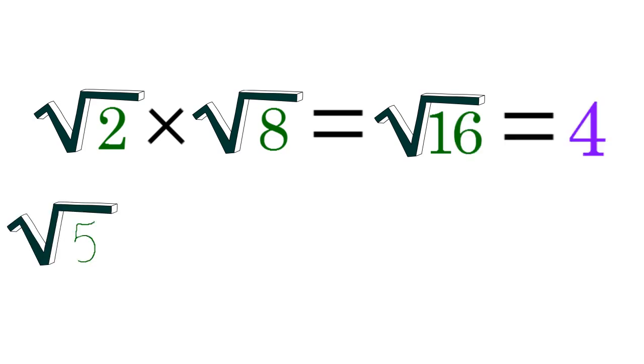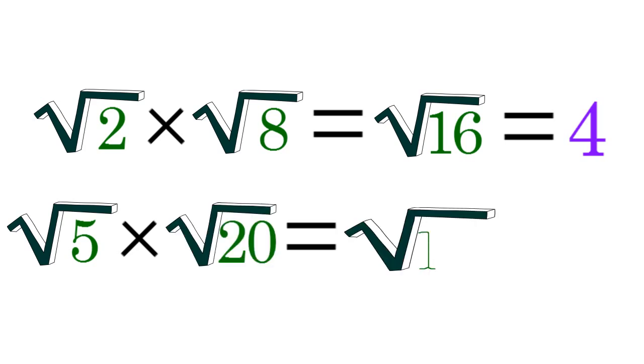And when you multiply radical 5 by radical 20, the result is radical 100, which equals 10.